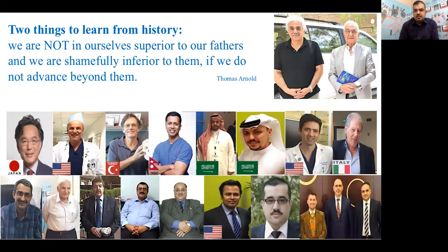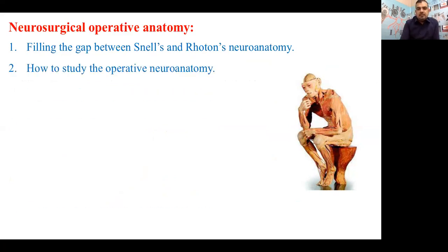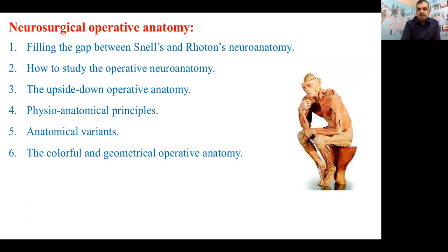I always start my lecture with this slide: 'We are nothing without our teachers, and we are shamefully inferior to them if we do not advance beyond them.' We have a lot of teacher role models from all around the world. The neurosurgical operative anatomy series covers nine ideas. The first and most important is to fill the gap between basic neuroanatomy and advanced Rhoton neuroanatomy. The second is about how to study operative neuroanatomy — what resources and what sequence. Third is upside-down operative anatomy.